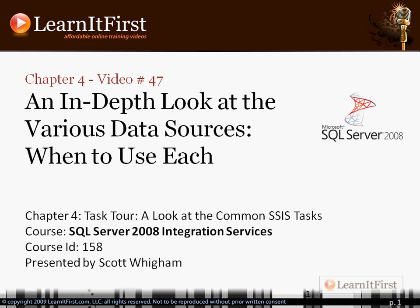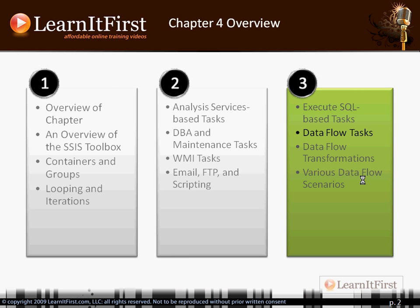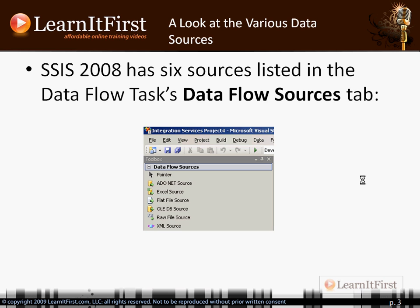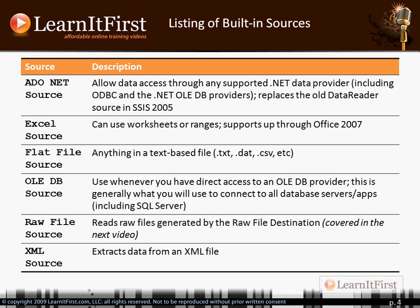Let's get back into lecture mode and cover two topics: data sources and data destinations in the data flow task. We'll cover data sources in this video and data destinations in the next. We're going to look at the seven different built-in data source types and when we would use each one. When we're inside a data flow task, there's a data flow sources tab with the available components shown on screen.